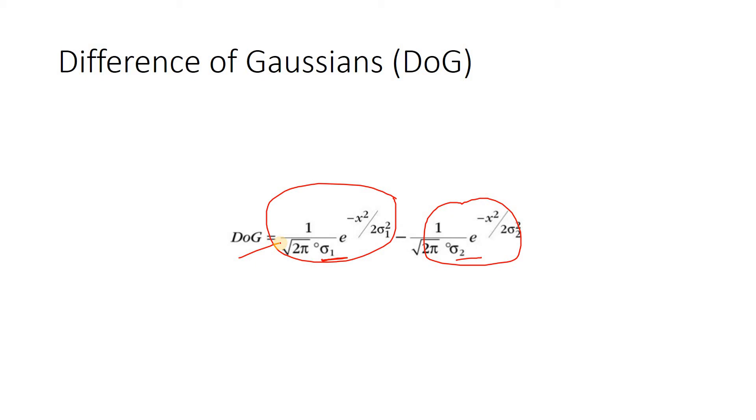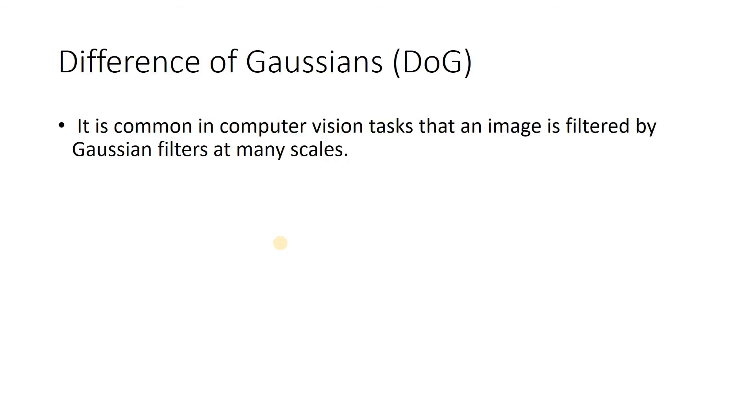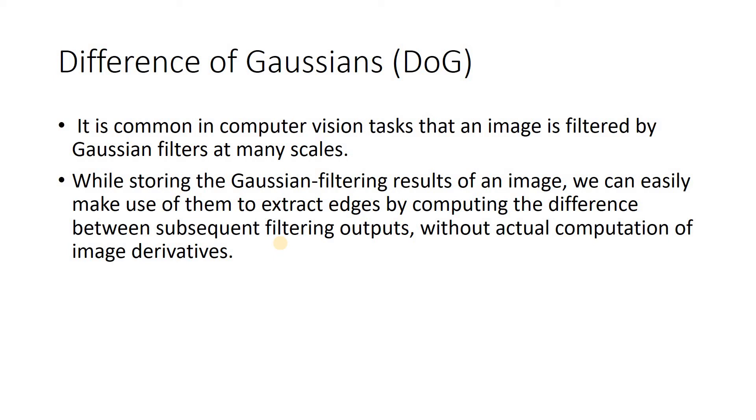Now, the question might appear: we have this beautiful implementation of LOG. Why are we going to use this DoG method to get the effect of LOG? The reason is very simple. In computer vision or image processing domain, many times the situation appears that we apply different Gaussian filters, that is Gaussian filters with different standard deviation on the same image. Now to get the effect of edge detection like LOG, we can simply subtract those results.